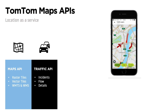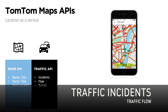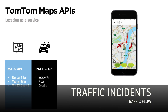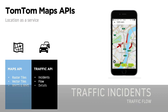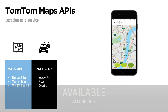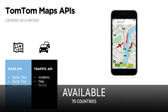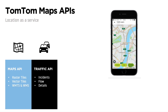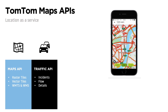Next, we have the Traffic API — a set of web services designed to get incidents, traffic flow, and details of traffic jams in real time and around the road network. These are supported in over 70 countries and updated every two minutes.